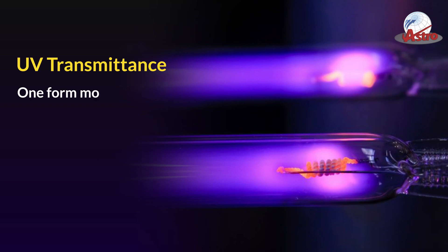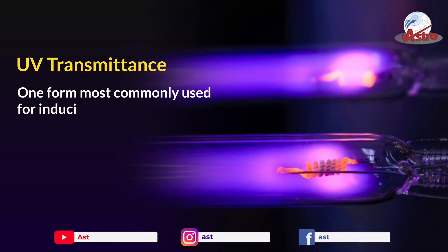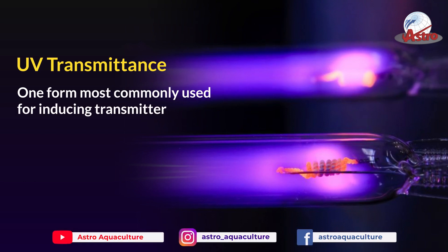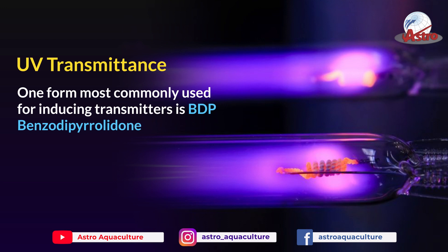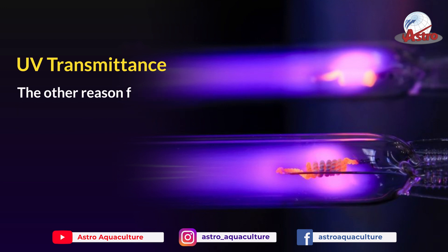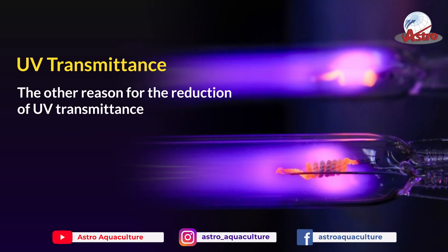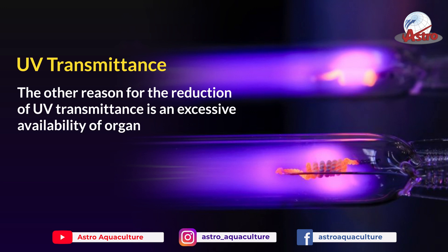One form most commonly used for inducing transmittance is BDP — benzodiparolidone. Another reason for the reduction of UV transmittance is the excessive availability of organic substances.